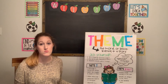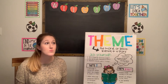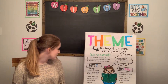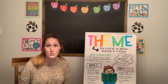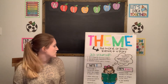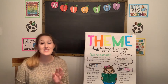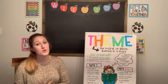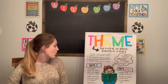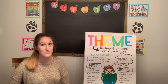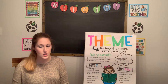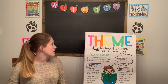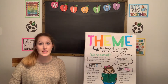Theme is universal — it applies to everybody. Themes are something that everybody can learn from and use. They're expressed in a sentence or a statement. Theme is not directly written in the text, not specific or unique to the story, and not a one-worded topic. So as we read our book today, we're going to be looking for the moral or lesson that's learned in the story.